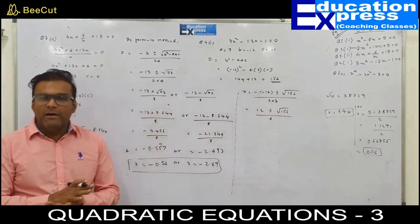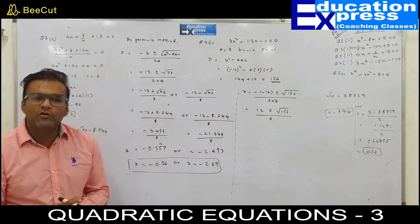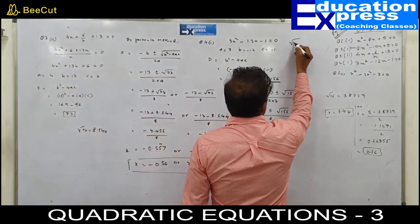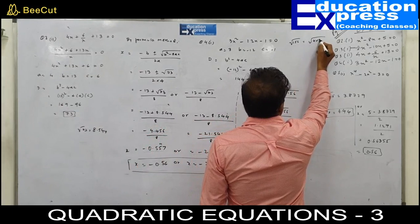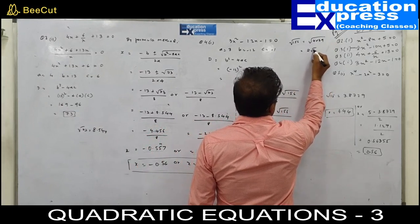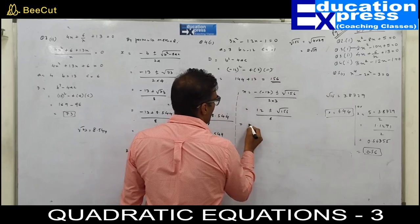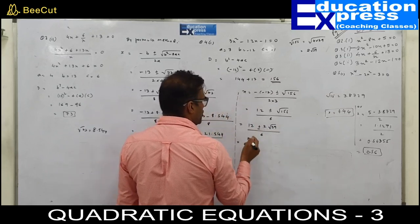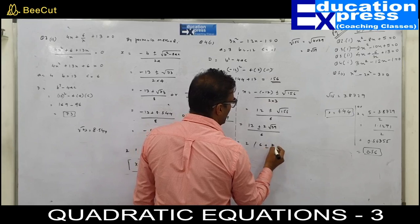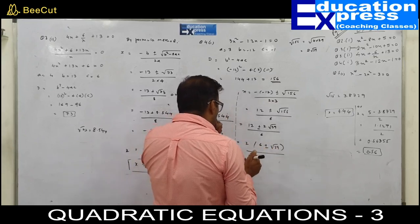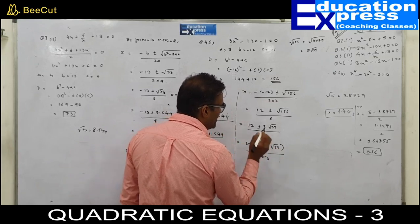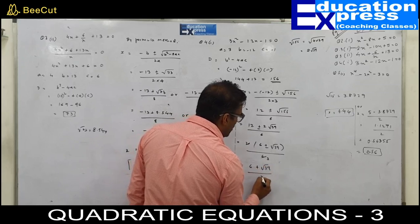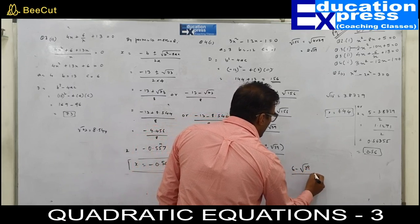Root 156 simplifies to root of 4 into 39, which gives 2 root 39. Substituting: 12 plus or minus 2 root 39, the whole upon 6. The factor 2 is common, giving 6 plus or minus root 39, the whole upon 3. So x equals 6 plus root 39 upon 3, or x equals 6 minus root 39 upon 3.